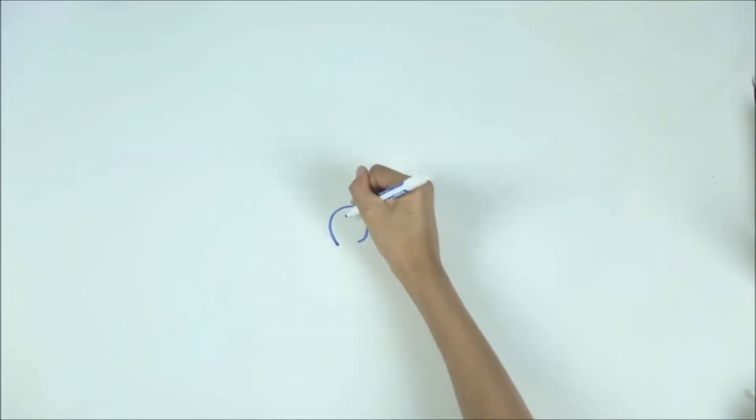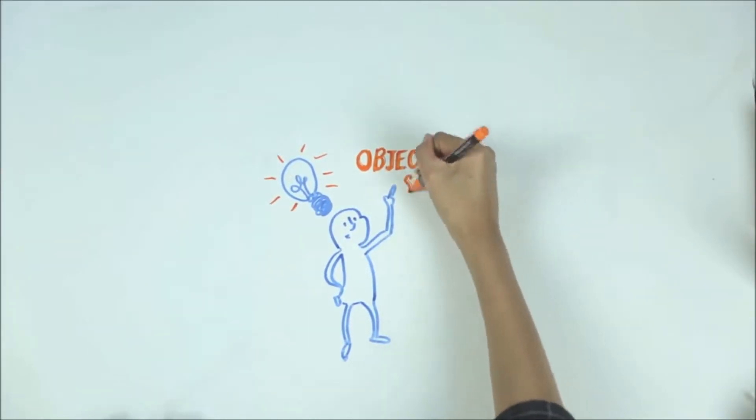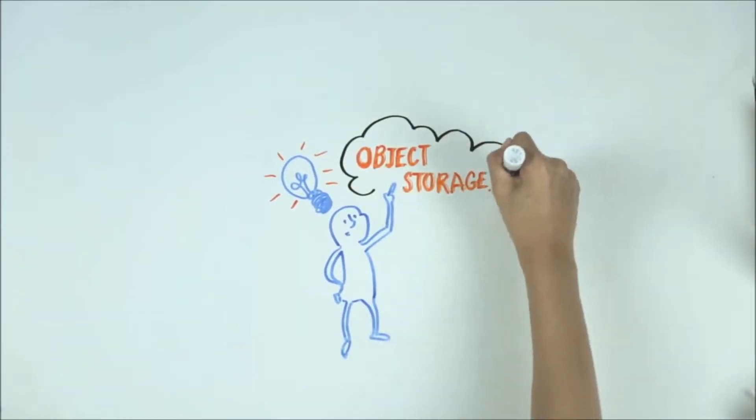In the late 1990s, a new kind of storage coined object storage was developed. Object storage is a general term that refers to the way we manipulate and organize data in units of storage called objects.